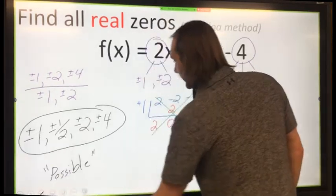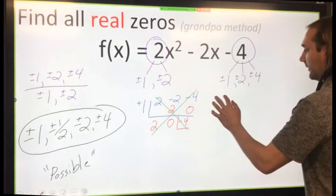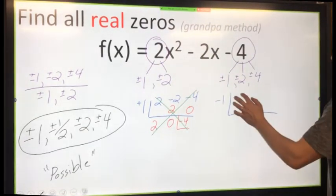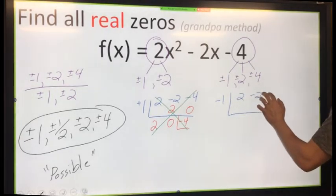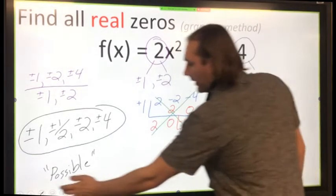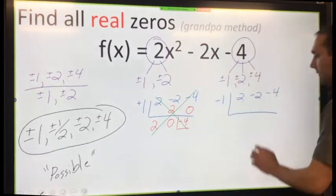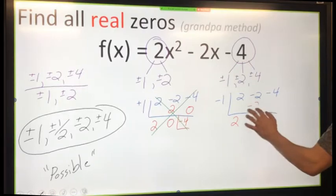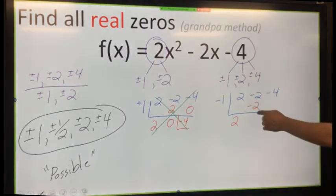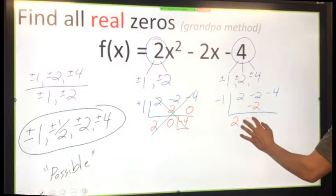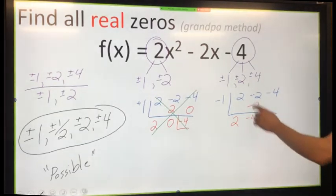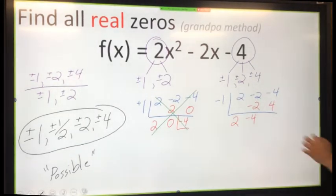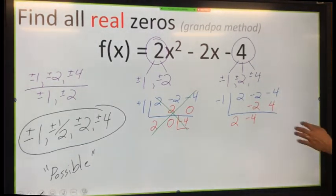So since I have already used positive 1, let me try negative 1. Put my leading coefficients in and divide. So 2 gets dropped down. 2 times -1 is -2. Add these together. -2 plus -2 is -4. And -4 times -1 is +4. Which adds to? A 0. Zero.